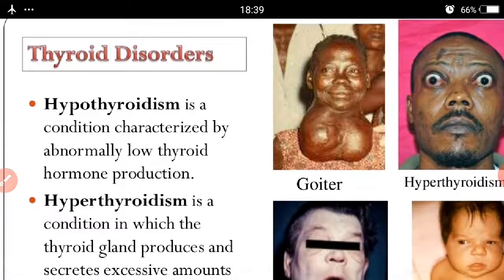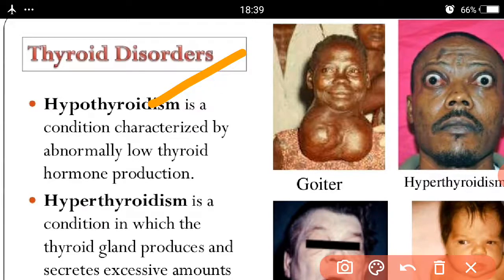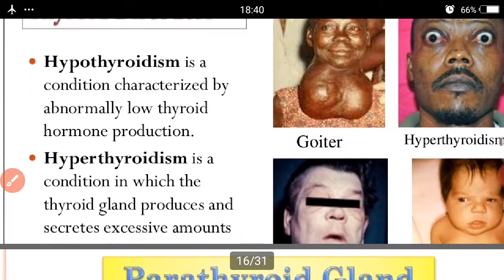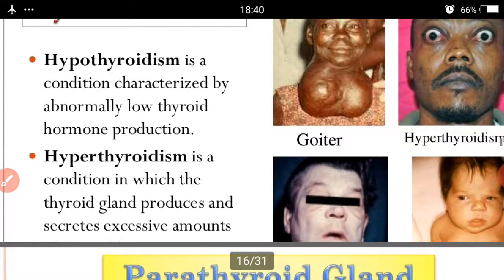A thyroid disorder like hypothyroidism is characterized by abnormally low thyroid hormone production — if thyroid hormone is reduced, a simple goiter may form. In the case of hyperthyroidism, the thyroid gland produces and secretes an excessive amount of thyroid hormone.